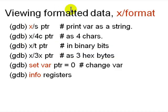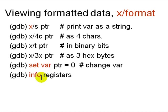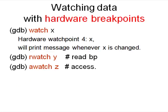You can print data in a formatted manner — for example, x/s ptr prints a pointer as a string, and you can print as characters, binary, or hex. You can change a value with the set command on the variable name. Info registers shows register information. For hardware breakpoints — when memory is being read or written unexpectedly — use watch x, rwatch (stop on read), or awatch (stop on access). This is useful when you don't know what is corrupting your data.